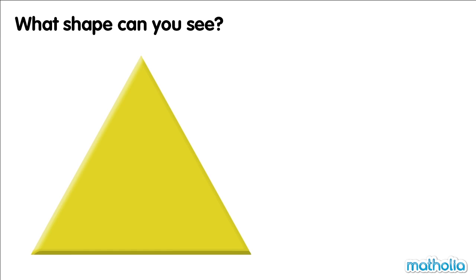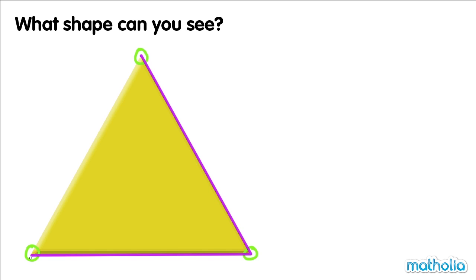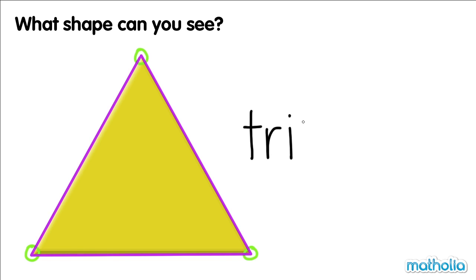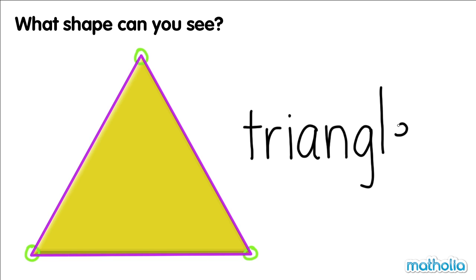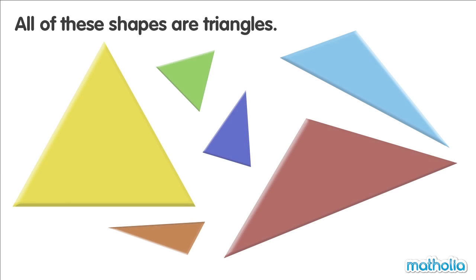What shape can you see? There are one, two, three corners. And there are one, two, three sides. This shape is a triangle. Triangle. All of these shapes are triangles.